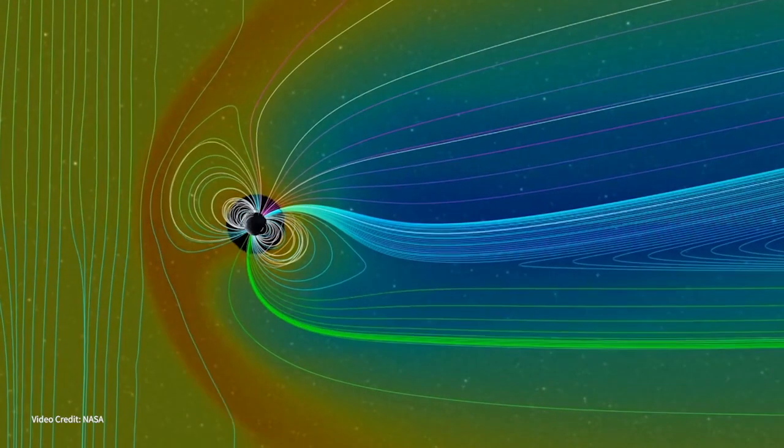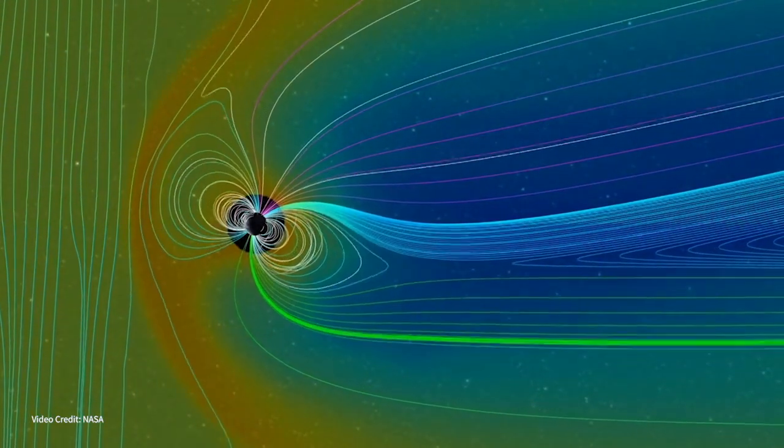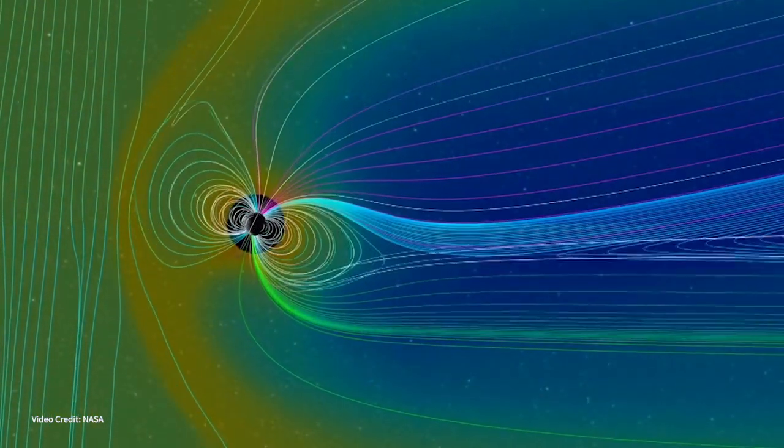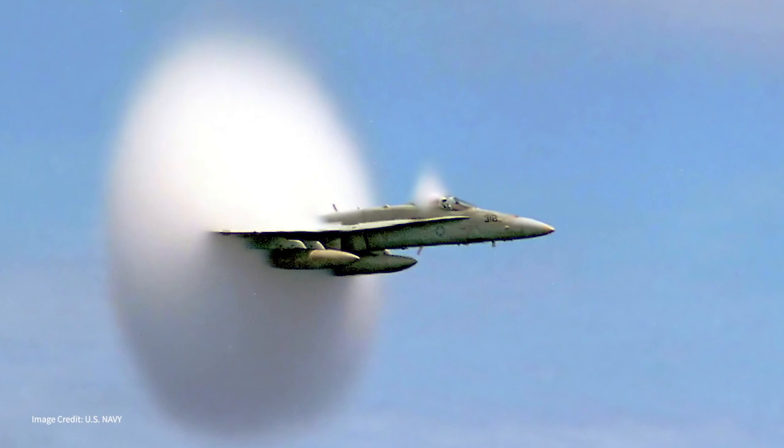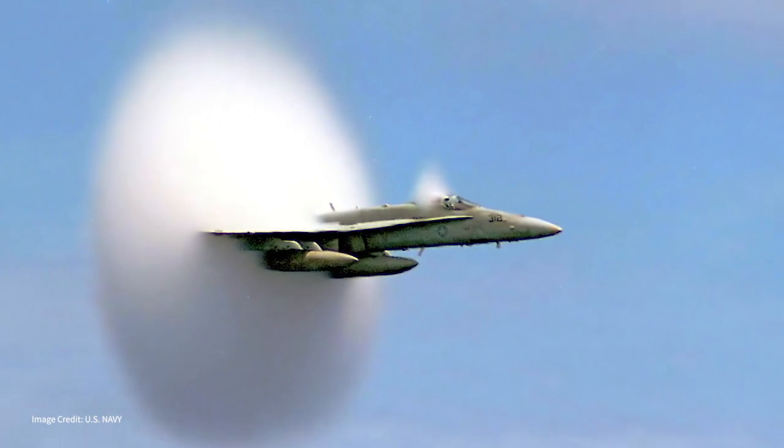A shock is a process by which a supersonic flow is slowed down to a subsonic flow by increasing the temperature and pressure. Your classic example would be like a jet and it goes supersonic and passes the sound barrier.